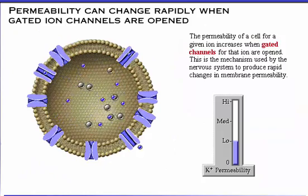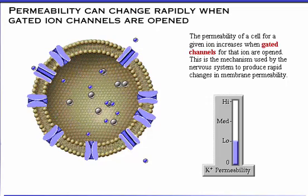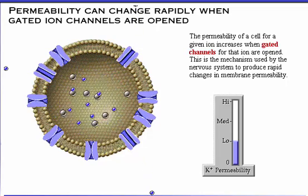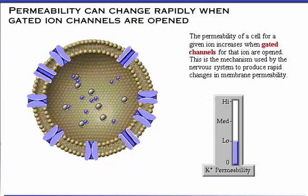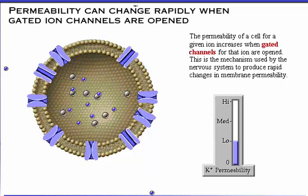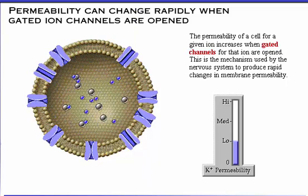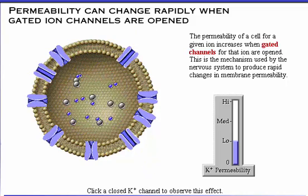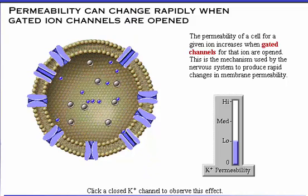You have learned that some channels have gates that may be either open or closed. The permeability of a cell for a given ion increases when gated channels for that ion are opened. This is the mechanism used by the nervous system to produce rapid changes in membrane permeability. Click a closed potassium channel to observe this effect.